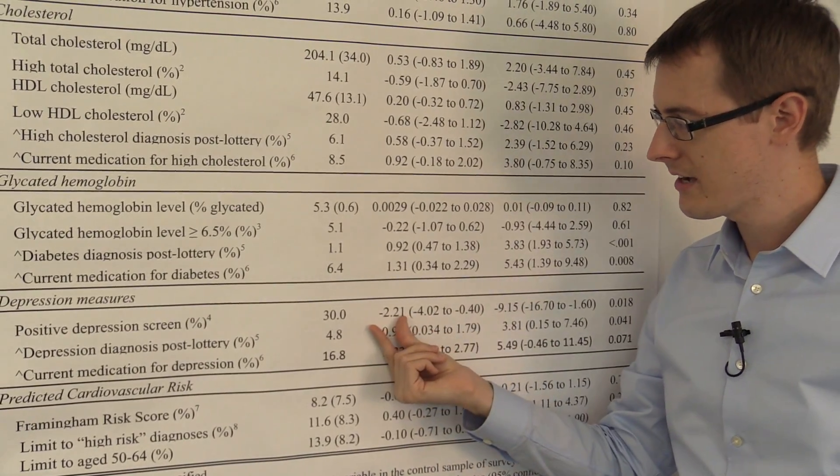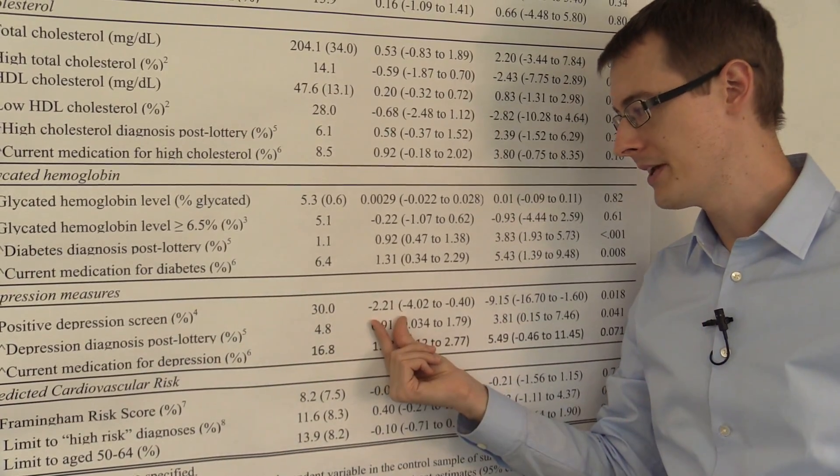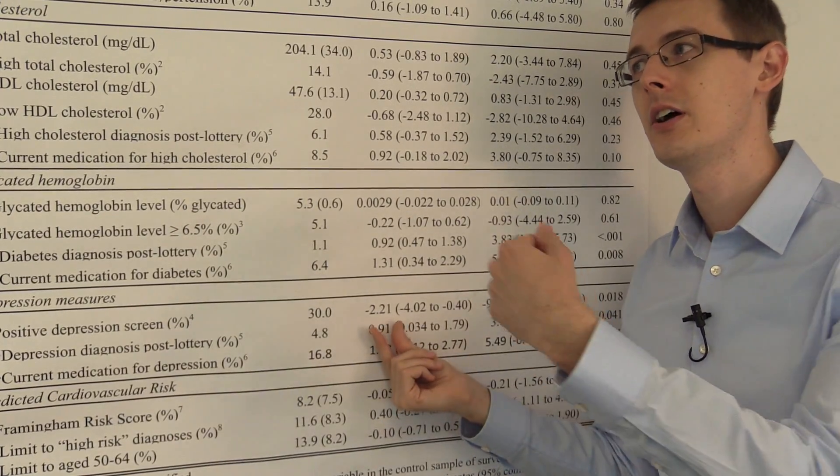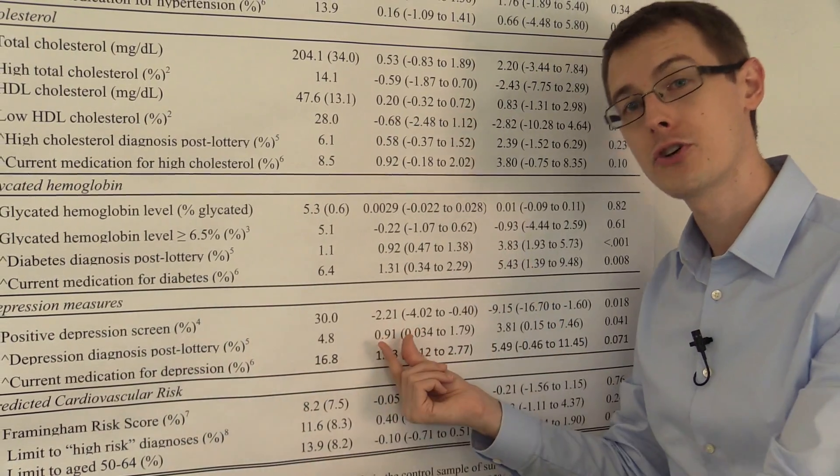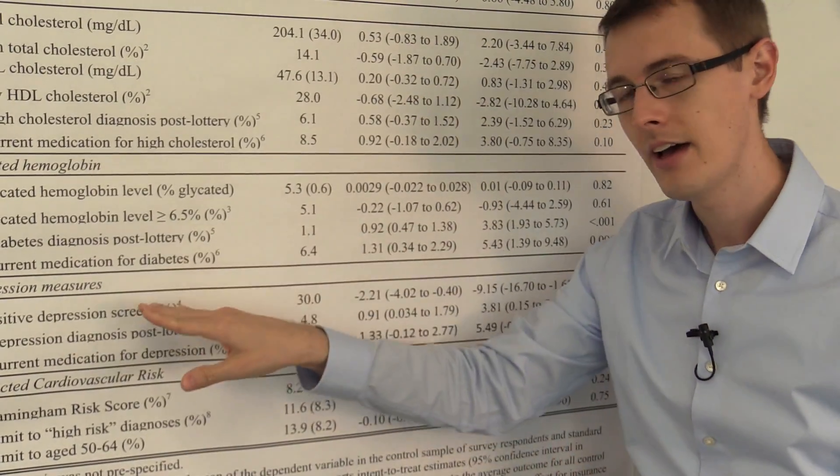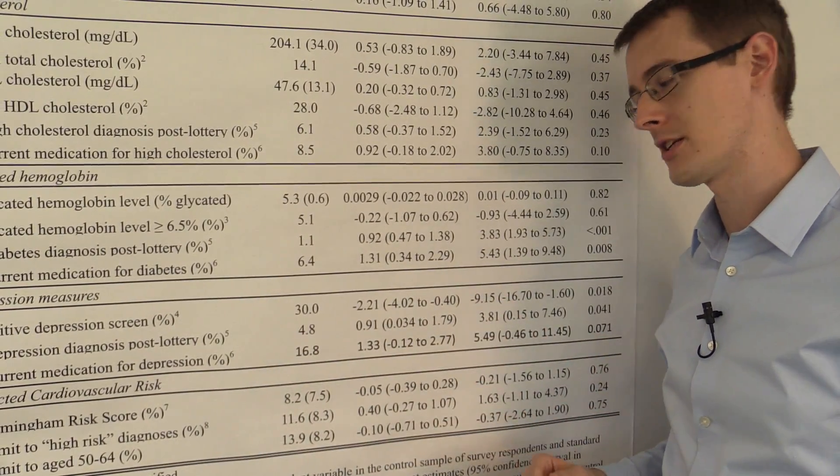and then adjust this number to get this number. We take our reduced form numbers, the effect of the outcome on the instrument, and adjust it using the effect of the instrument on the treatment to get the actual effect of treatment on outcomes. That's how the indirect inference estimator works.